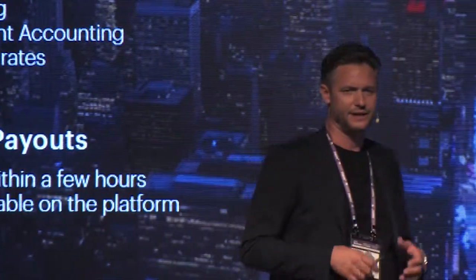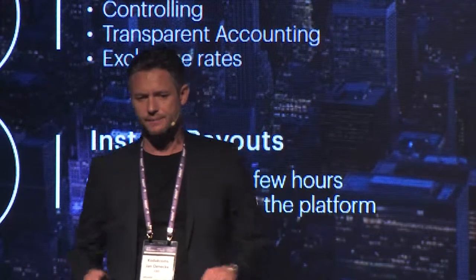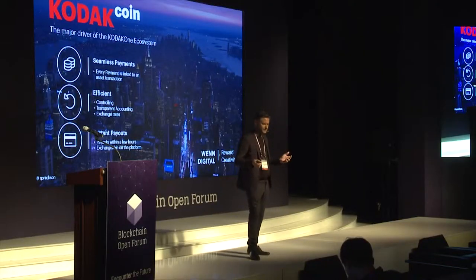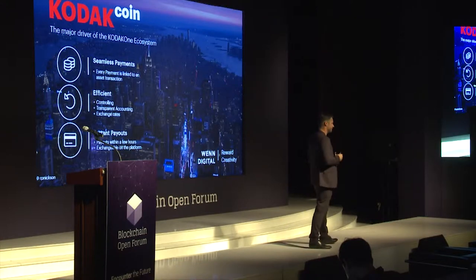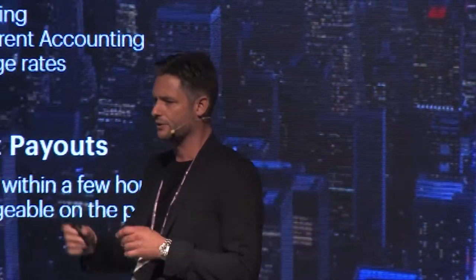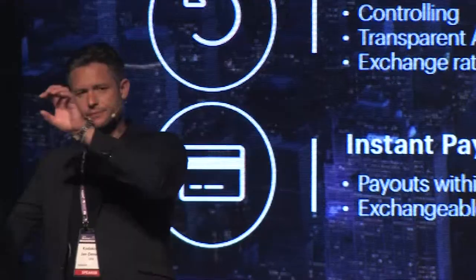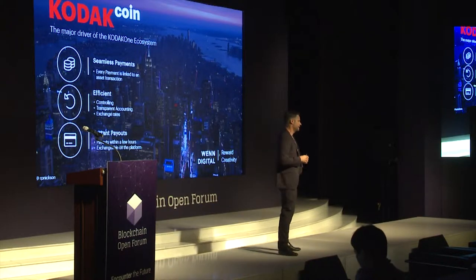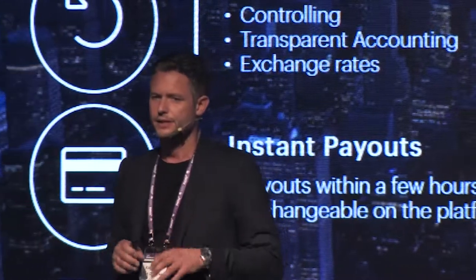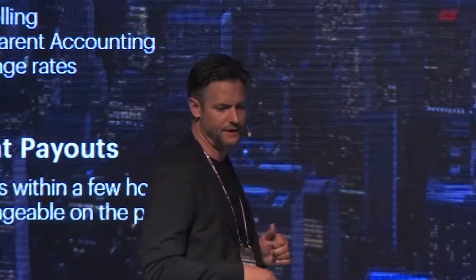Therefore, it was a logical step to put a payment system beneath that accounting system with a cryptocurrency. Why a cryptocurrency? Because right now, with a low margin product like an image, we have different accounting systems which don't speak to each other, we have different currencies which makes it very inefficient, and we have long payout terms with the normal royalty systems. This is what we are changing. If you have all stakeholders within that rights chain and you know all the license terms in it, then it's very easy, if you pay it out in Kodak coins, to instantly distribute the money within all stakeholders. So it's a seamless payment system and it's very efficient.